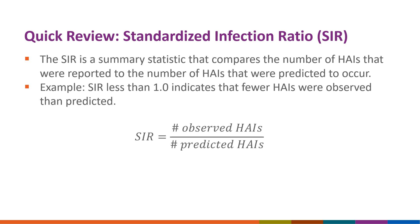The SIR, which stands for standardized infection ratio, is a summary statistic that compares the number of HAIs that were observed to the number of HAIs that were predicted to occur. The number predicted, which is the SIR denominator, is based on a calculation using nationally aggregated data during a baseline time period and risk adjusted for several factors statistically significantly associated with differences in infection incidence. The Re-Baseline is changing how the SIR denominator is calculated, while the calculation of number of observed events — the SIR numerator — is not changing.